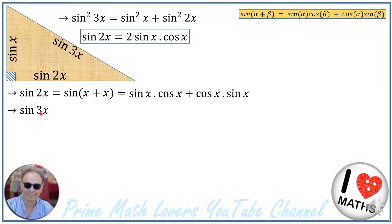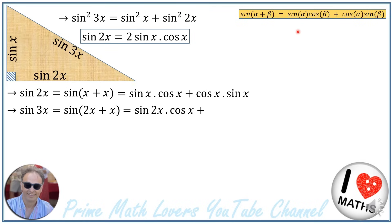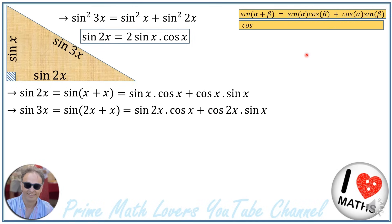Now we are going to calculate sine of 3x. We write sine of 3x as sine of (2x + x), which expands to sine of 2x times cosine of x plus cosine of 2x times sine of x. We also need to calculate cosine of 2x using the cosine addition identity.